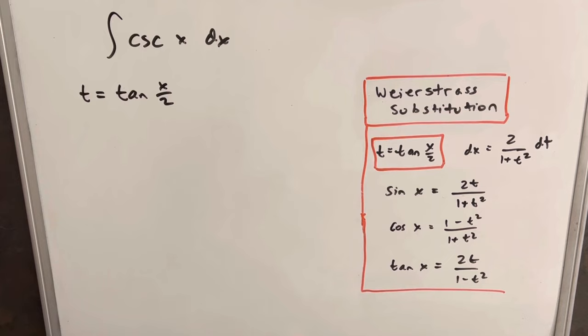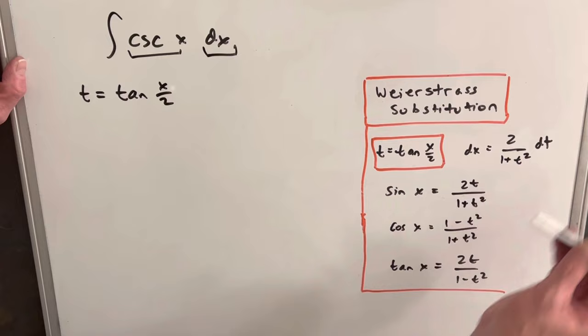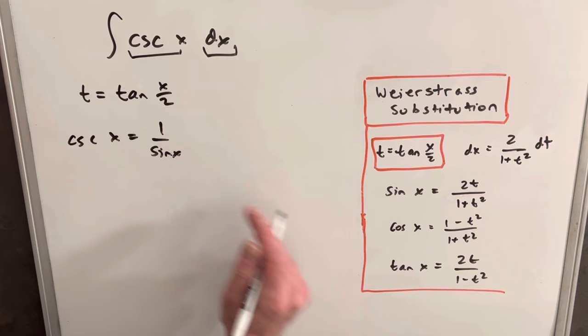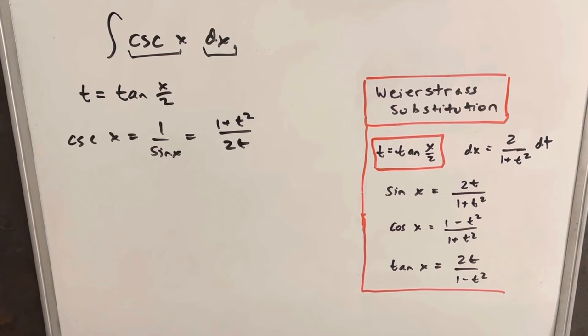So for this integral to make the substitution, we just need a value for cosecant x and we need a value for dx. We already have our dx value over here. Now cosecant of x is actually just 1 over sine x. So we don't have in our table cosecant, we have sine. Well, cosecant is just the reciprocal of sine, so we can write this as 1 plus t squared over 2t. So that gives us everything we need to make the substitution.